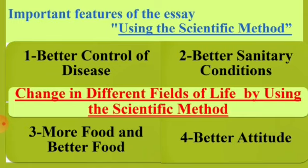Now we will see the important features of the essay. The first one is better control of disease. Number two, better sanitary conditions. Number three, more food and better food. And number four, better attitude. We will now see these four important features in detail.